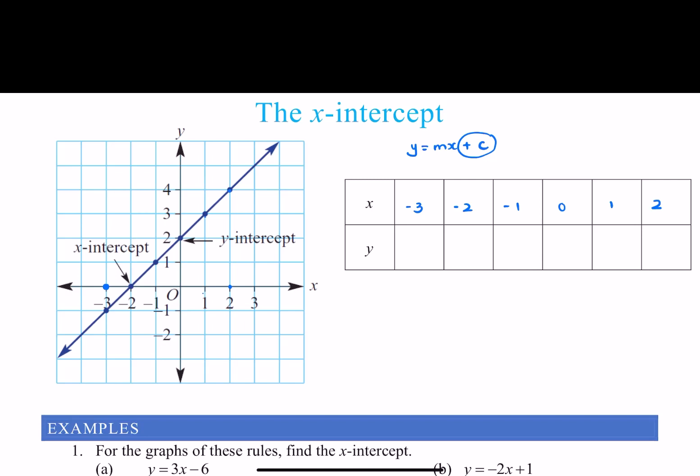So now I'm going to fill in the y value. When x is -3, come down to the line, I can read off y is -1. When x is -2, y is 0. When x is -1, y is 1. When x is 0, y is 2. When x is 1, y is 3, and so on. When x is 2, y is 4.